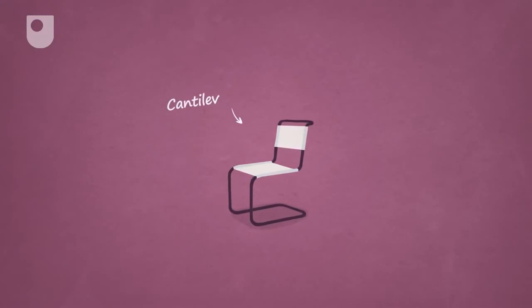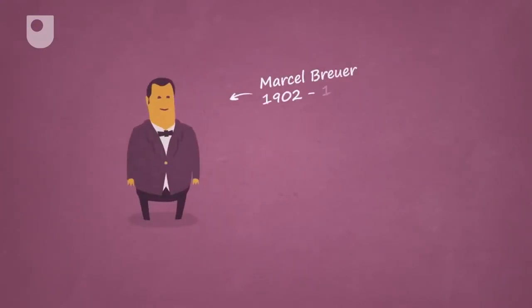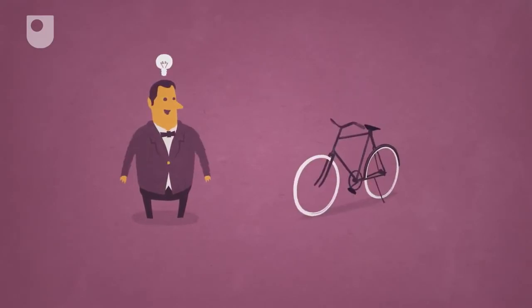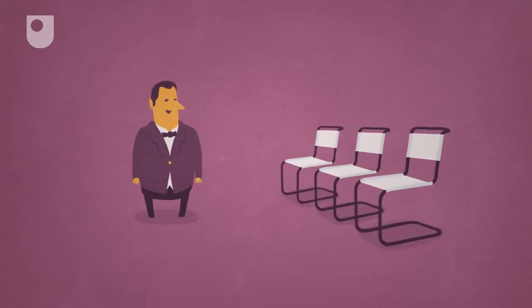One of the best known icons of Bauhaus design is the cantilevered chair. Designed by someone named Breuer, it was inspired by the steel tubes of his bicycle, and ultimately led to the first lightweight, mass-produced metal chair.